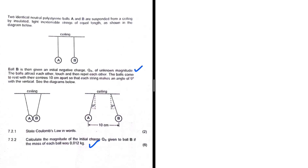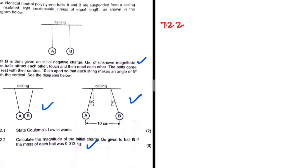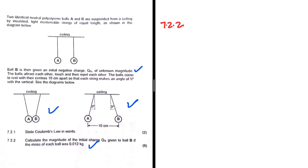The two balls are made to touch and then they repel each other. The balls come to rest with their centers 10 centimeters apart, so that each string makes an angle of 9 degrees with the vertical. We need to calculate the magnitude of the initial charge qb given to ball B, if the mass of each ball was 0.012 kilograms.